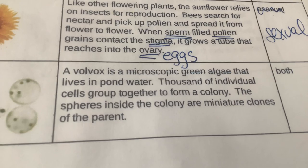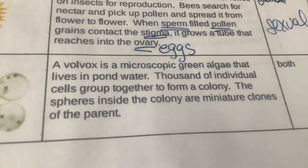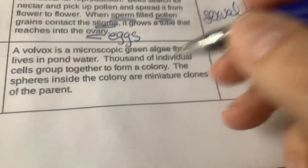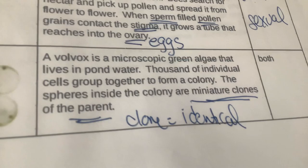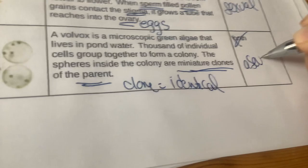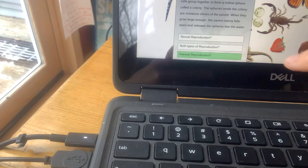Flowers reproduce sexually, which you wouldn't think about, but they do. Next is this little picture — it doesn't look like much. This is the way it looks underneath the microscope, and it's called a volvox. It's a microscopic green algae that lives in ponds. Thousands of individual cells group together to form a colony. The spheres inside the colonies are miniature clones of the parent. The word clone means identical — they're identical to the parent. So if the DNA is identical, you should automatically be thinking asexual reproduction. Let's take a look at our website to confirm — and we are correct.